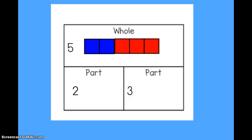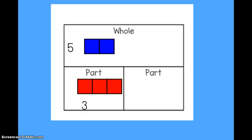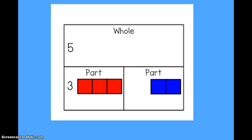Now I could do that problem a different way. I could have my five up in my whole. This time instead of breaking off the blue part, I could break off the red part, and my other part left over would be my difference. So this time my subtraction sentence would look different. I would still start with five as my whole, but this time I took away three and my difference was two. This would be the related subtraction fact for that part-part-whole mat.